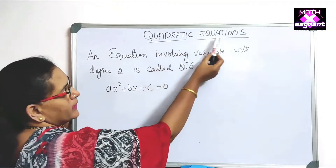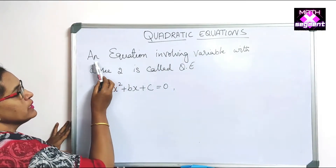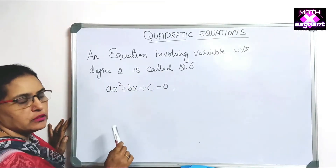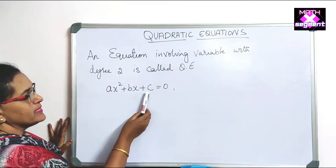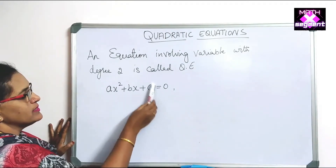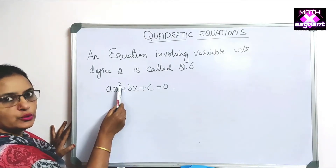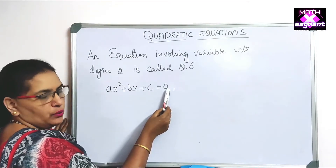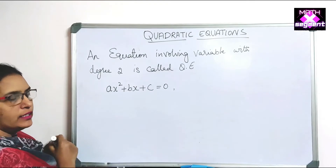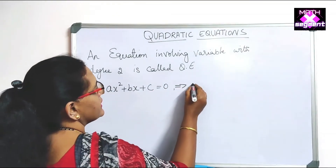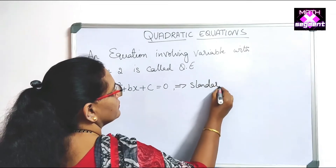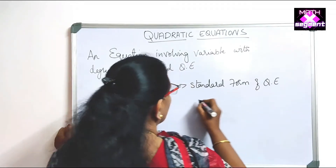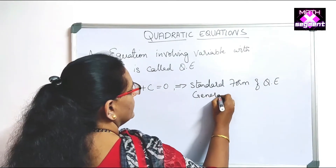In today's class, let us learn what is a quadratic equation. A quadratic equation means an equation involving variables with degree 2. For example, ax² + bx + c = 0 — this equation with highest degree 2 is called a quadratic equation. This is called the standard form, or general form, of a quadratic equation.